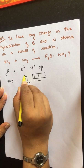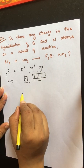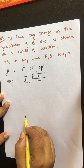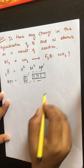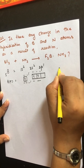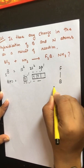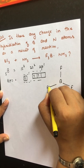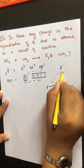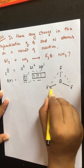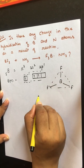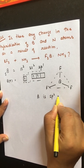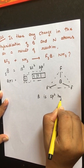We can say boron is sp² hybridized, which forms bonds with three fluorine atoms and gives a trigonal planar shape. So boron in BF₃ is sp² hybridized with trigonal planar shape.